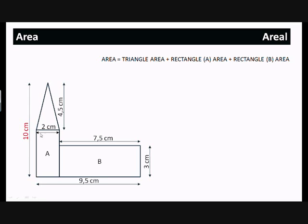For rectangle A, we know it's 2 centimeters wide. From top to bottom of the whole church is 10 centimeters. This bit here is 4.5, so the difference is 5.5. The height of rectangle A is 5.5 centimeters. So what can we do now?